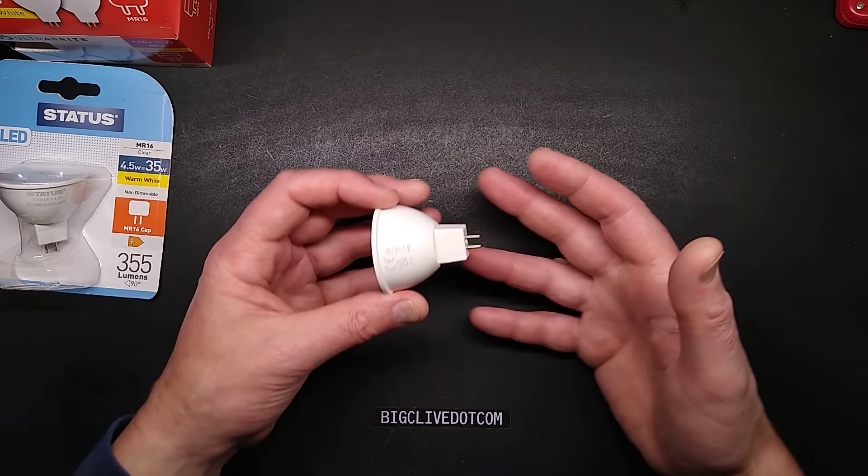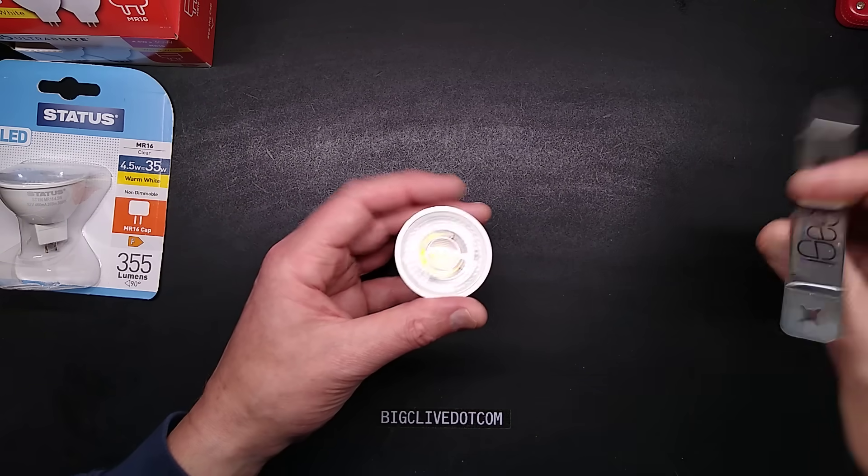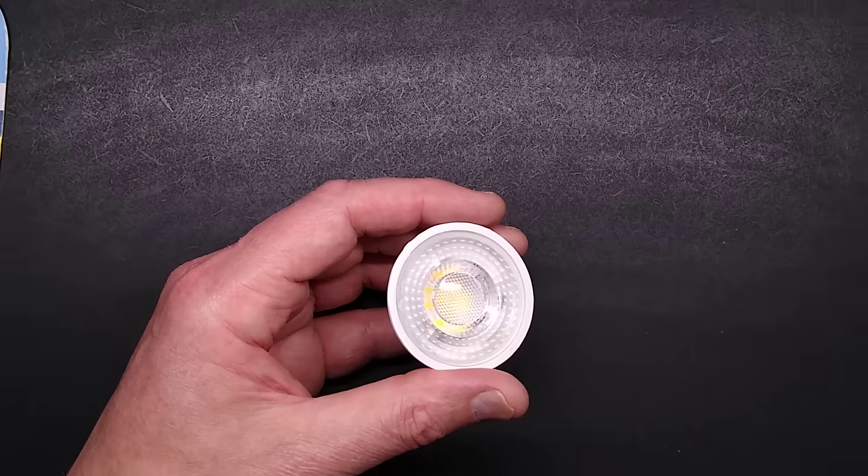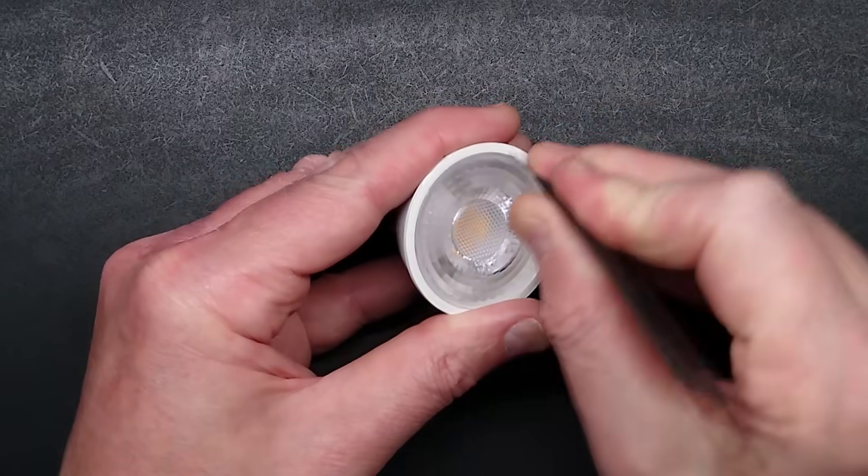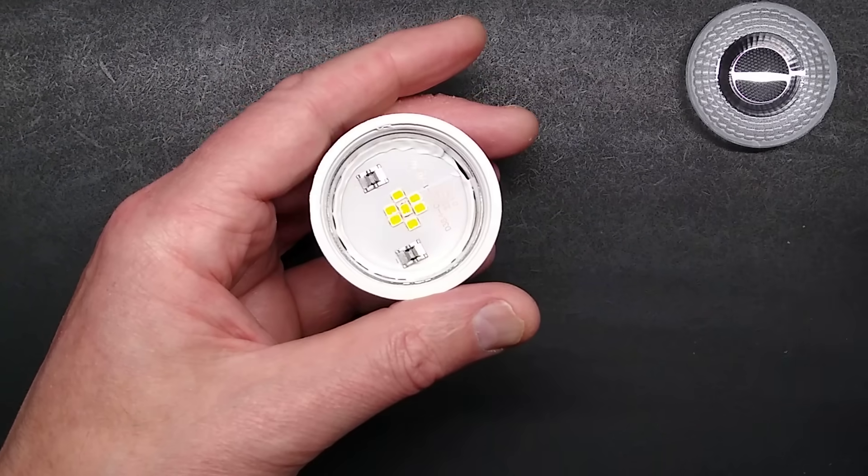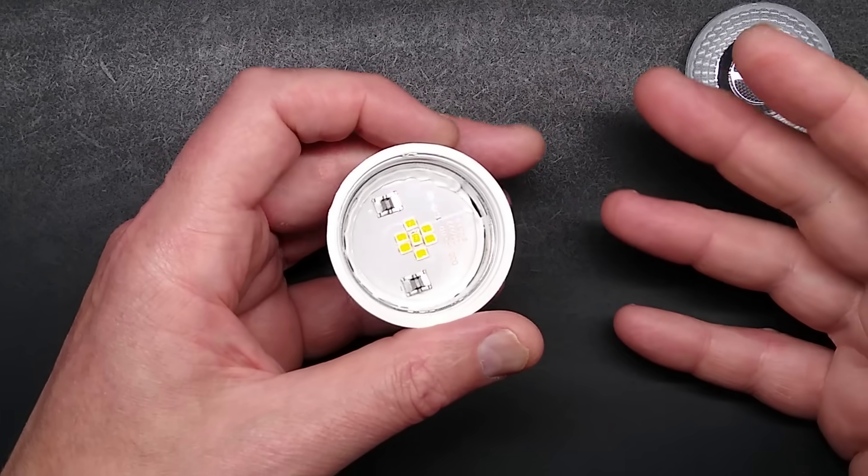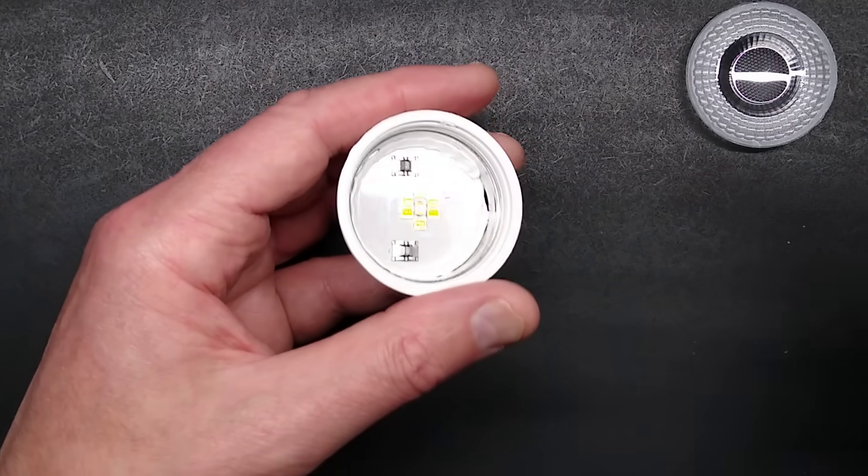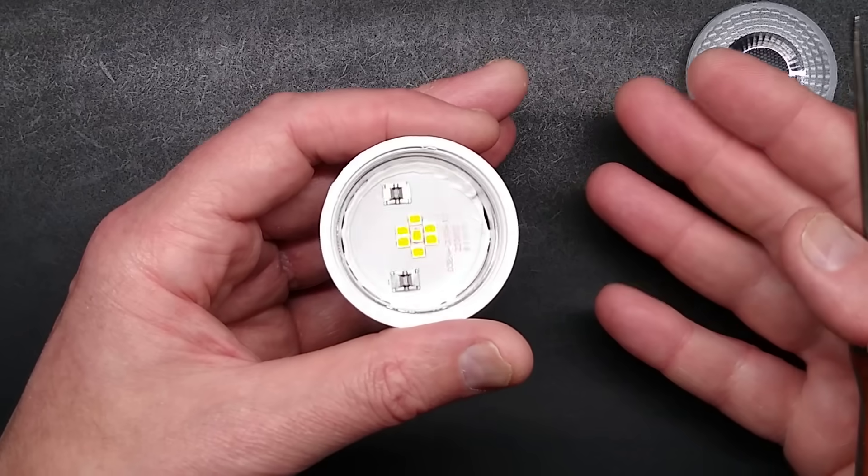These are designed for working on AC or DC. Let's start just opening one up. They're designed for AC or DC, but the one thing they're not really suitable for is use with electronic transformers for halogen lighting. You can use them in a 12 volt DC supply.